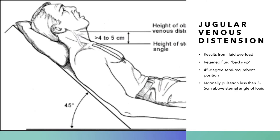Another symptom of heart failure, especially right-sided, is jugular vein distension, which results from fluid overload in the venous system because the cardiac output of the right heart is not sufficient to clear the backlog of fluid in the peripheral veins. The best way to assess this is to have the patient lay at a 45-degree angle. If you see more than 4 cm of jugular vein distension above the sternal angle, that's indicative of venous distension and heart failure. It's a little subjective, but you will see this in hospital and skilled nursing facility settings.